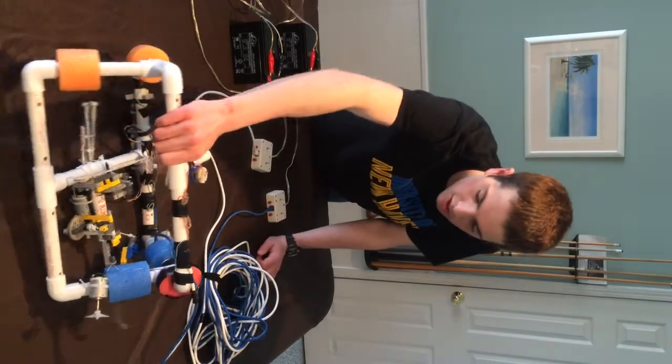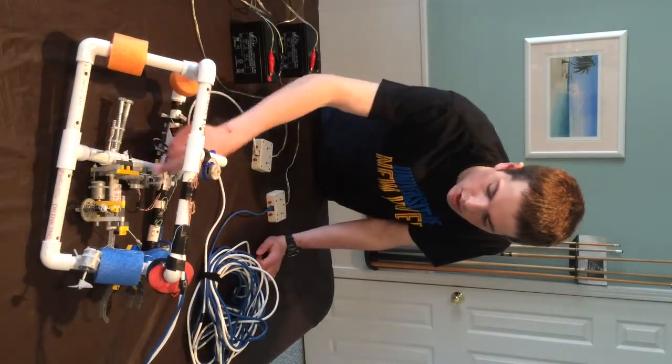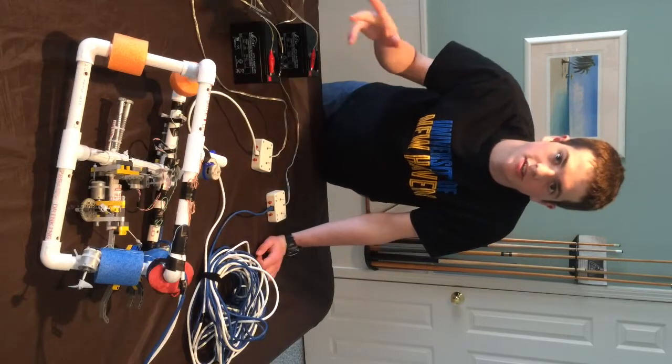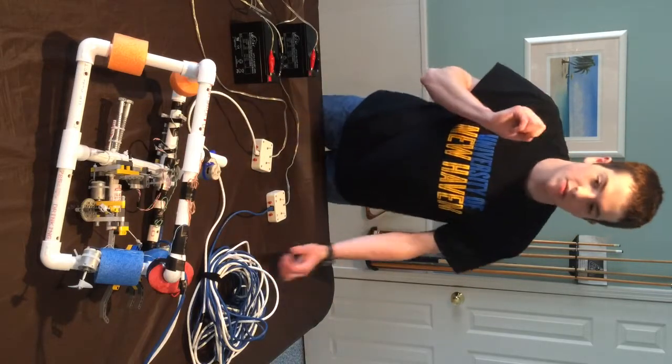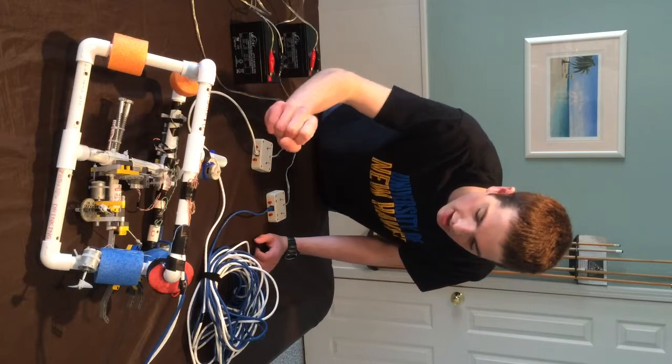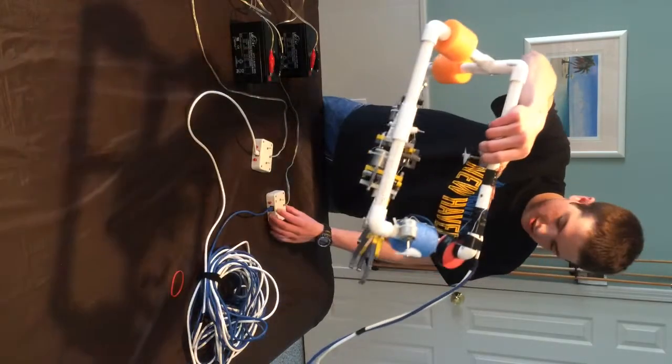So the next thing is the arm. The arm was pretty complicated. I used Lego pieces mostly because they are the easiest things to work with. It is such a wonderful building block. And so we got two axes of movement.